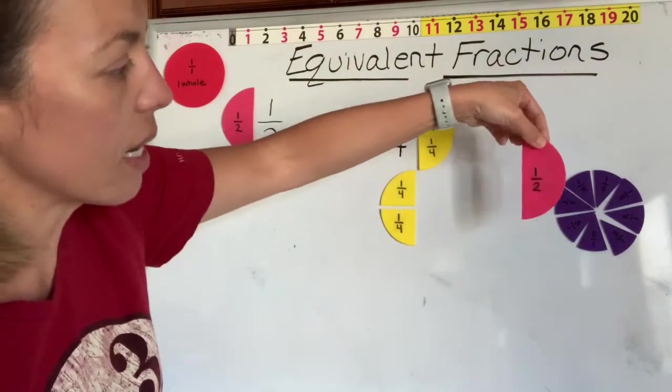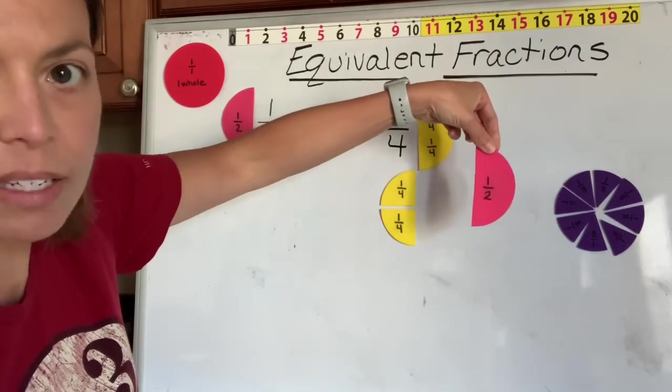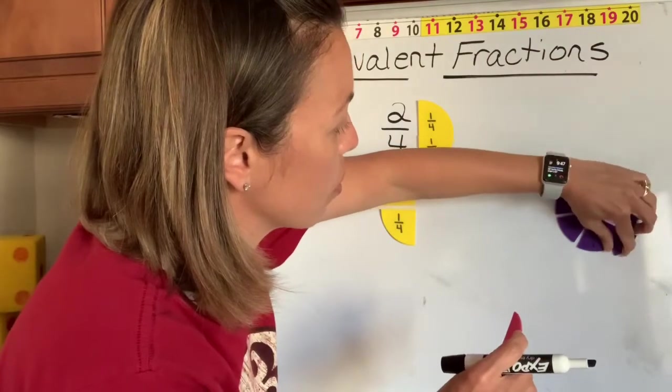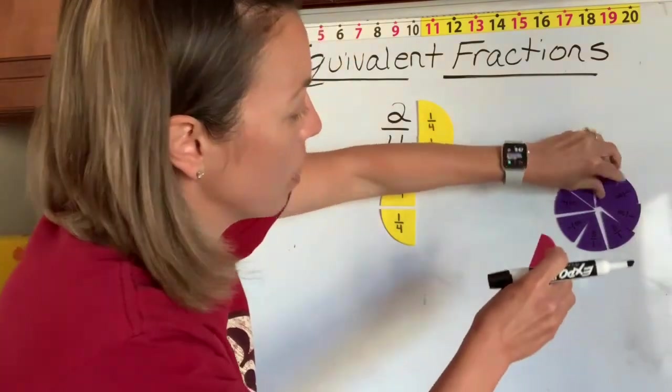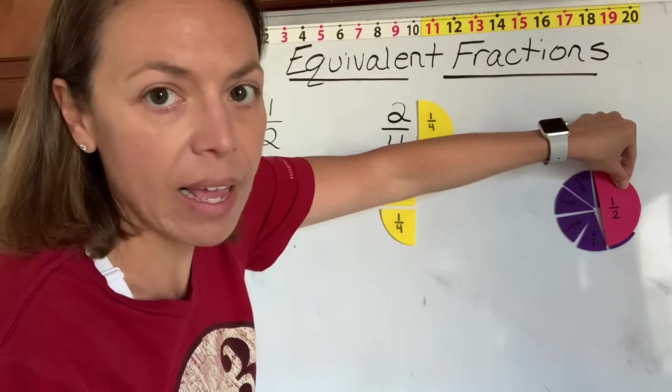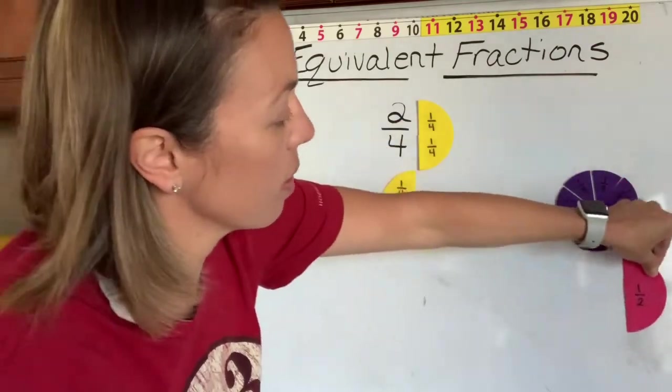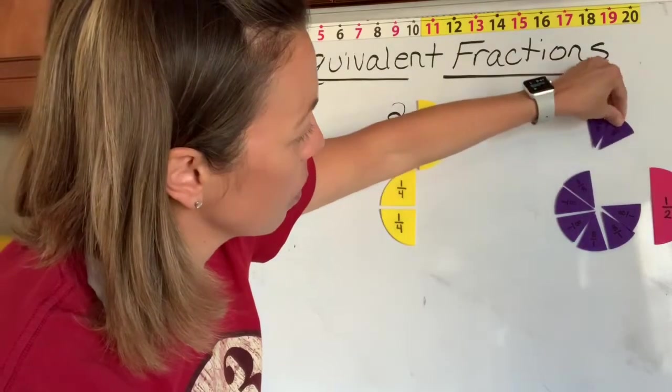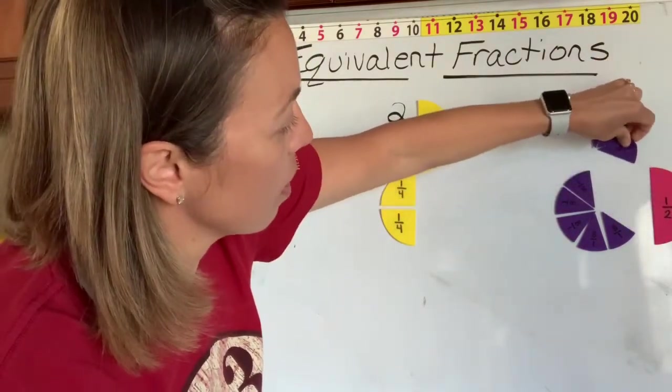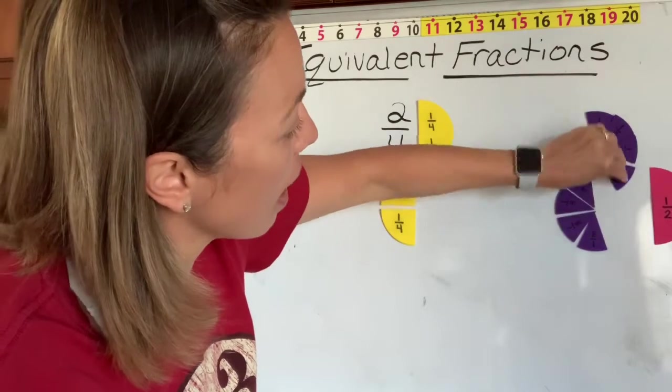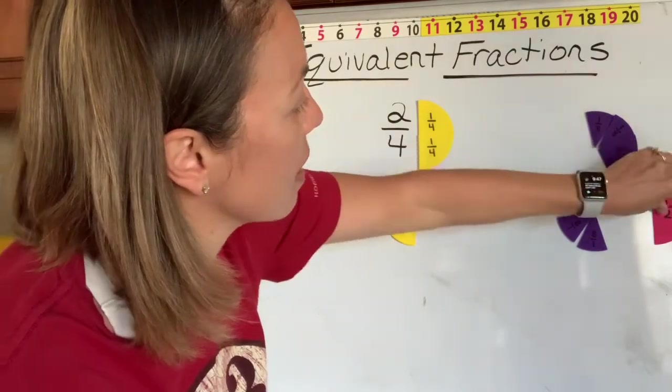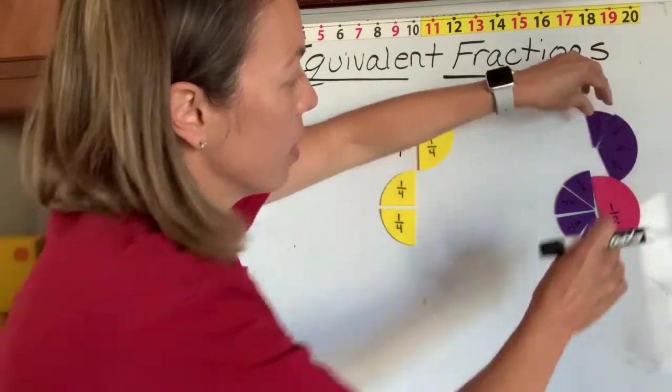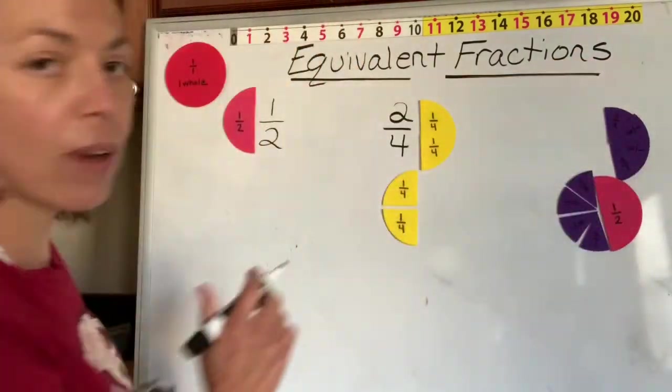And we want to find how many pieces it would take to be the same size as a half. So if we're looking over here at our circle, which we'll push back together a little bit, we can see that we would need one, two, three, four out of those eight pieces to be equal to a half.